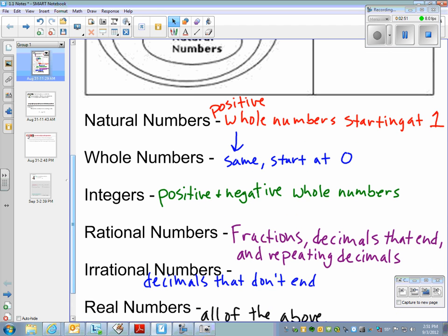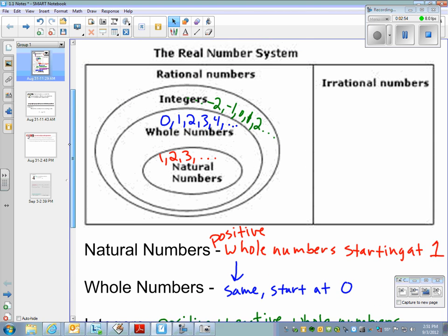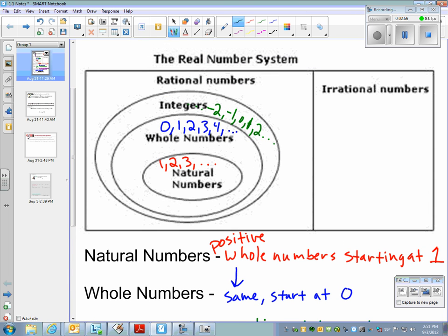Those are fractions, decimals that end, and repeating decimals. So these are numbers that you can write as a fraction. For example, 4 thirds, I can write that as a fraction. 0.25, that's a decimal that ends. Or I can write that as a fraction. 4 thirds is a decimal, but it goes on forever, but it's repeating. So as long as it's a repeating decimal or a decimal that ends, it's a rational number. Basically, just we want to be able to write it as a fraction.